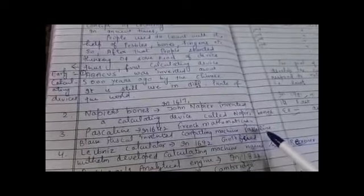Next is Pascaline. In 1642, French mathematician Blaise Pascal invented a computing machine, the Pascaline.